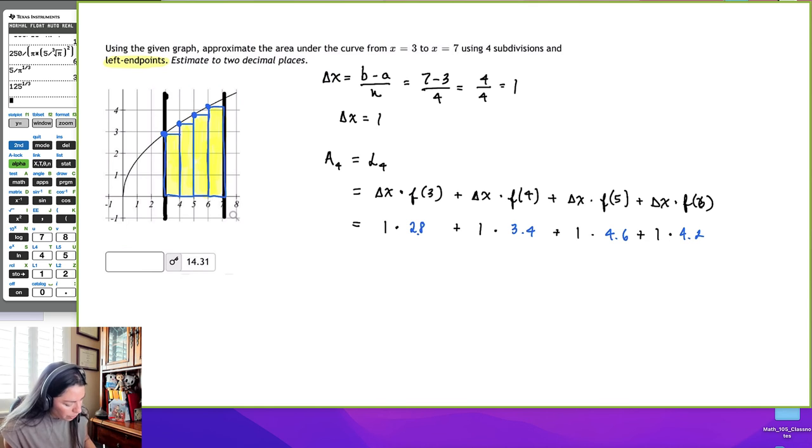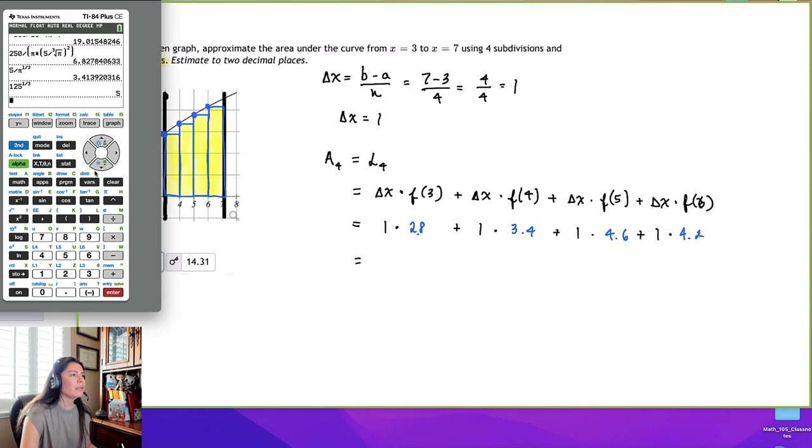And then I would just go to the calculator and add those all up. So I would come here and say 2.8 times 1, which is 2.8. And then 1 times 3.4, which is 3.4, plus 4.6, and then plus 4.2. And I get about 15.